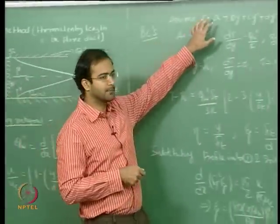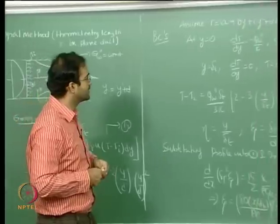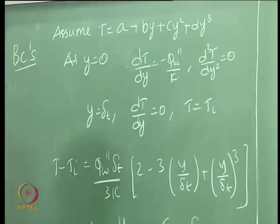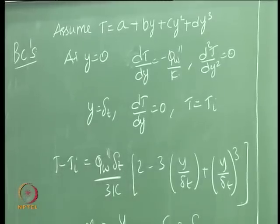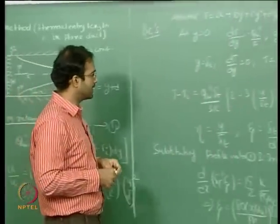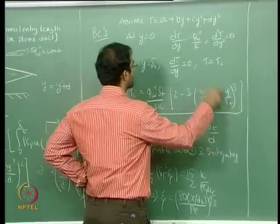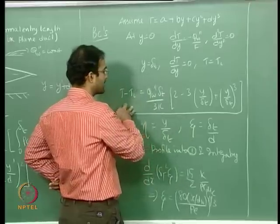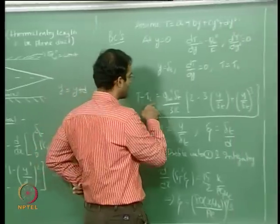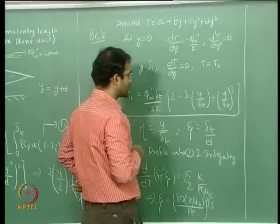For the temperature profile in the developing region we just make a guess for a cubic polynomial as usual. The boundary conditions are: specified wall flux at y = 0, the gradient is 0 at y = δ_T, and the temperature at the edge of the boundary layer equals the inlet temperature. From here, substituting all the boundary conditions, we calculate all the coefficients and get the resulting cubic profile for temperature, which is a function of the wall flux, the thermal boundary layer thickness, and the non-dimensional y coordinate.